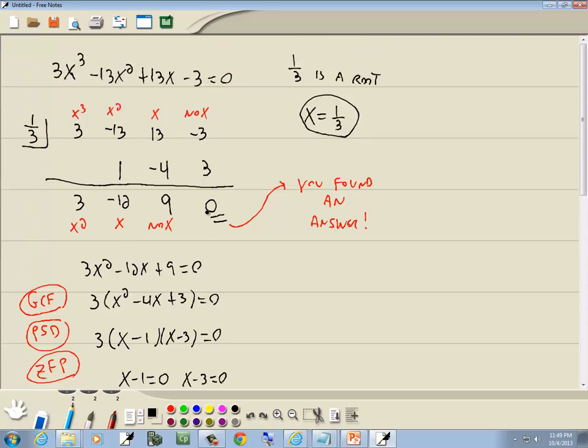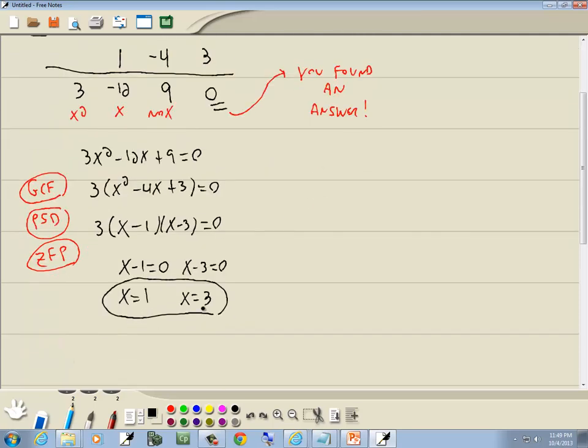Now, our largest power was a third power, which means we had three answers. They gave us one of the answers, it's 1/3. And then we use that to get our other two answers. So that counts for all three answers.